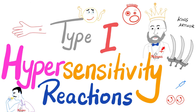Hey guys, it's Medicosis Perfectioneros, where medicine makes perfect sense. We continue our hypersensitivity reactions discussion. In the last video, we had an introduction about the four types and why we classify them this way: Type 1, Type 2, Type 3, and Type 4. Today we will dig deeper into the first type of hypersensitivity — the story of asthma, atopy, anaphylaxis, and the bee sting. With that said, let's get started.